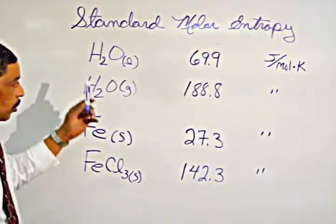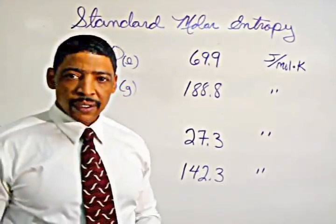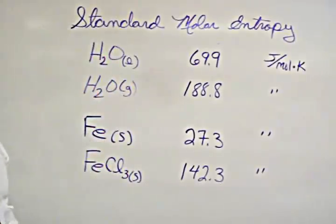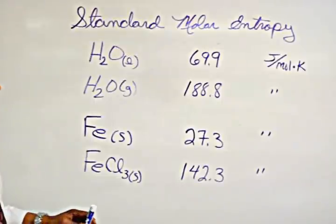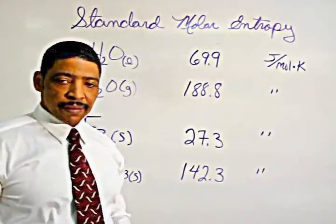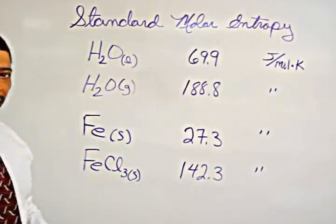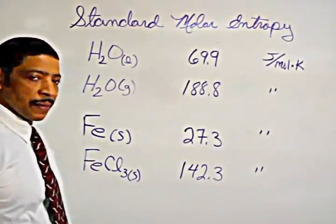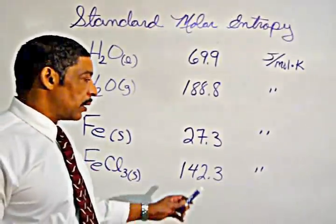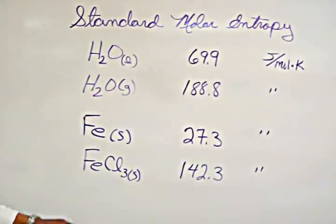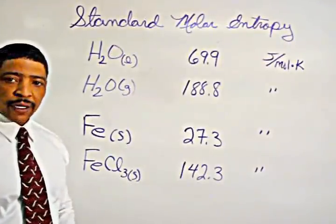Consider the example of liquid water versus water in the vapor phase. Clearly, water in the liquid phase is less disordered and less random than water in the vapor state. The standard molar entropy for liquid water is 69.9, and the standard molar entropy for water in the vapor state is 188.8. Comparing an element versus a compound, the metallic crystal of iron has a standard molar entropy of 27.3, whereas an ionic crystal of iron chloride has a standard molar entropy of 142.3.